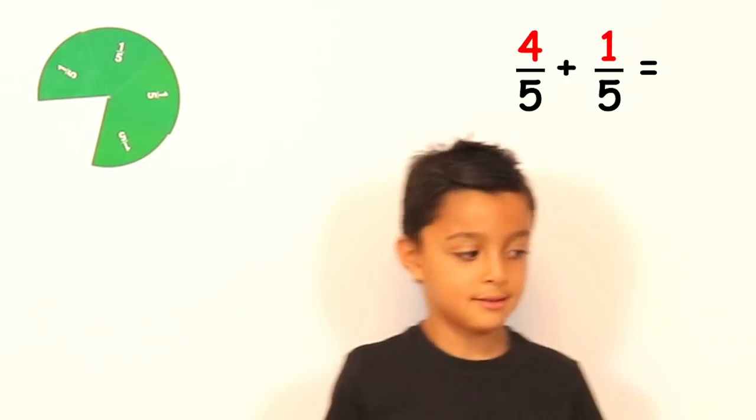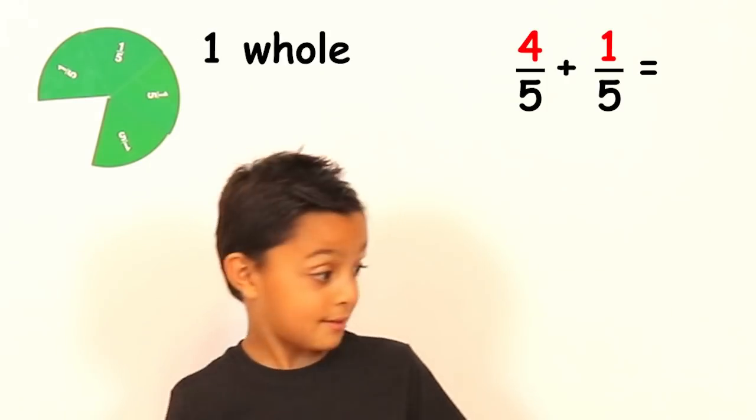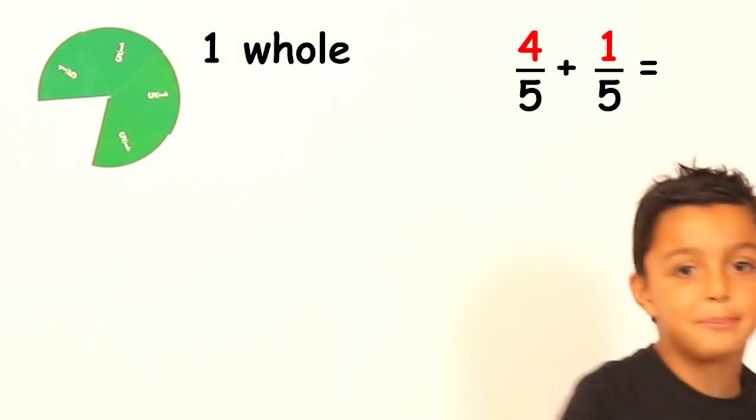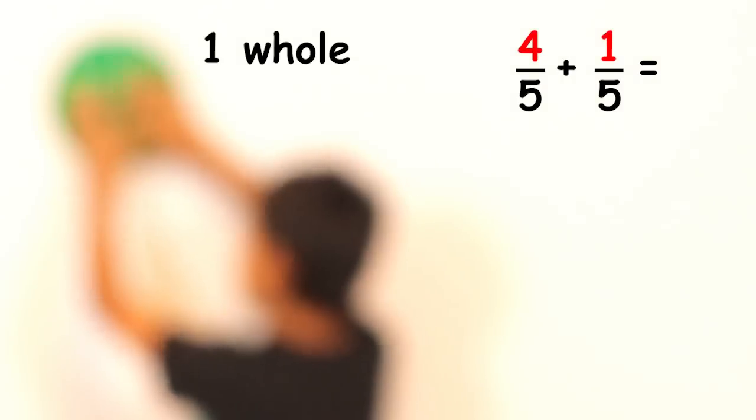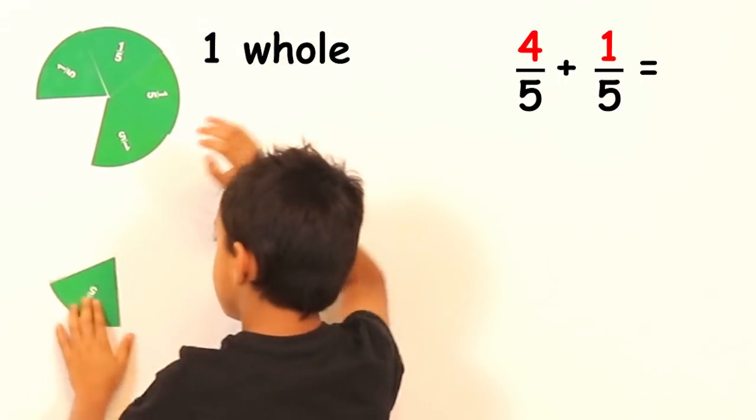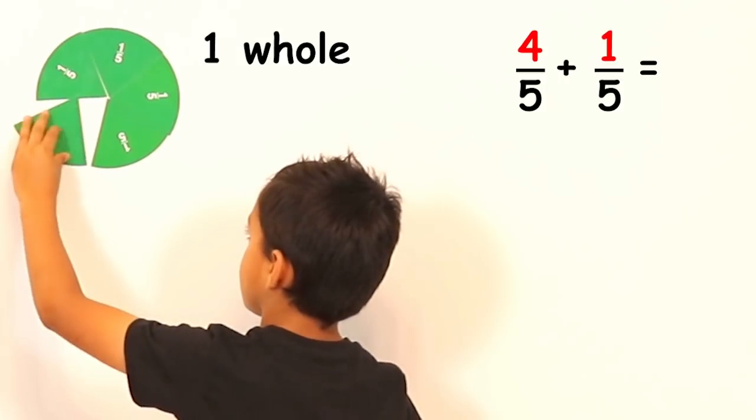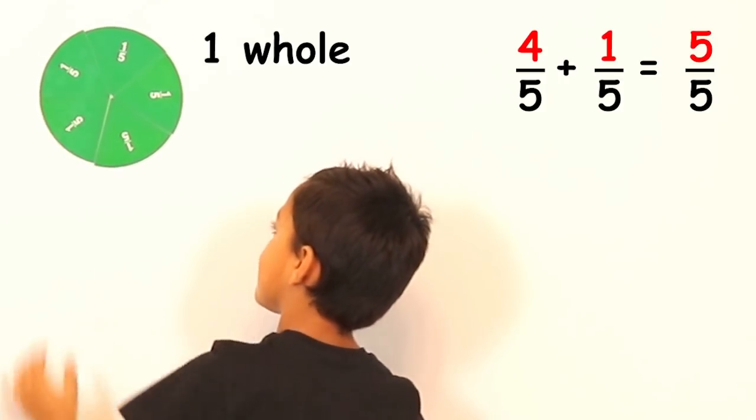Okay so are you saying that four fifths plus one fifth is equal to a whole? Yes. Okay. If I plus one fifth to it it's a whole. So how many fifths do we have all together? Five. Five fifths. Very good.